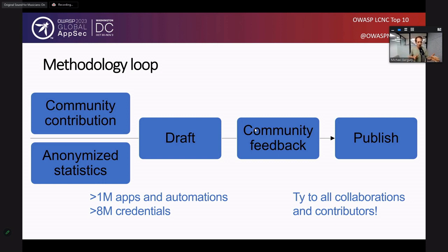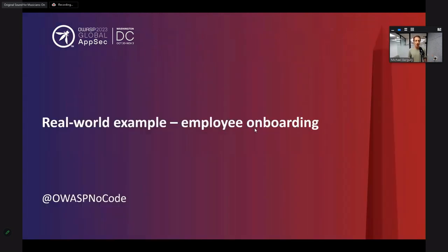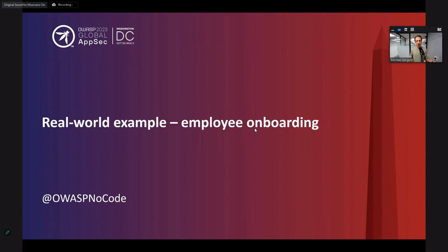Up until now I've covered many topics, but I haven't given you an example of what kind of risk we're seeing. Let me show you a concrete, real-world example of a specific application built in a large US enterprise. This is going to be a live exercise — I'm going to describe and show you how I build this application. Please put on your security reviewer hat and think about the logical vulnerabilities that occur when I build this application. What could go wrong?